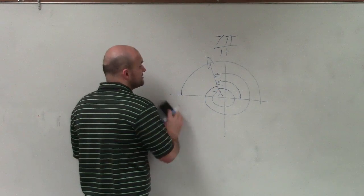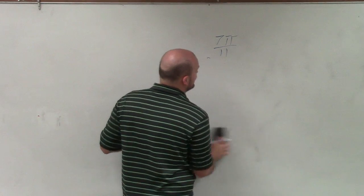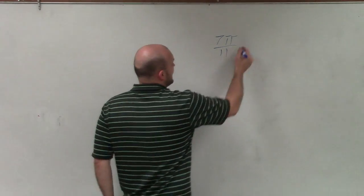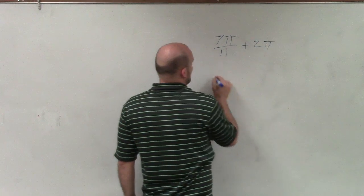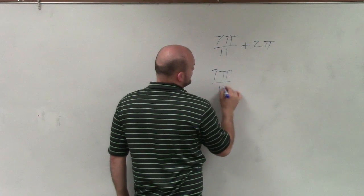So algebraically, to find the smallest and the largest coterminal angles of this angle, all I'm going to have to do is add 2 pi and then subtract 2 pi.